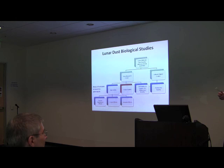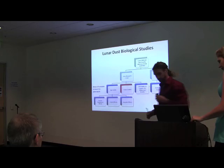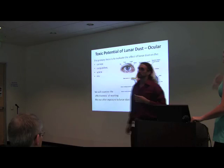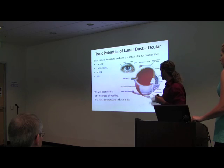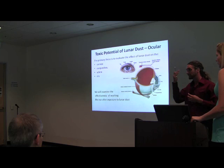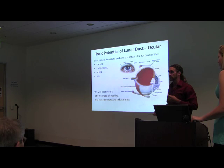In classical toxicology, skin studies are followed by ocular studies — we're taking the same approach at Ames. This work has not yet started, but we're working with partners to do the ocular studies. We're interested in looking at the effect of lunar dust on the cornea, conjunctiva, and sclera/iris of the eye. We want to know: if you get it in your eye, what effects will it have? We're also curious about how much washing is needed to remove it.